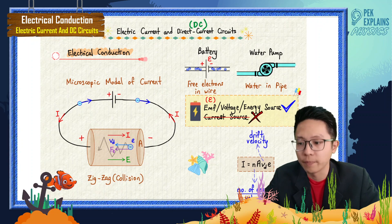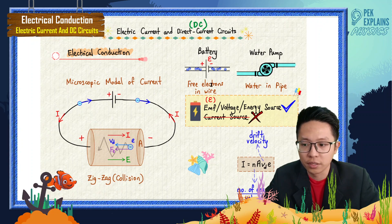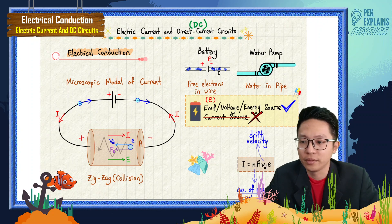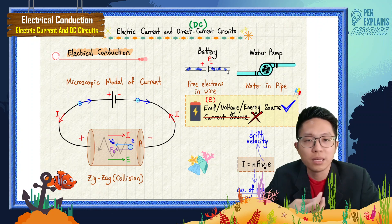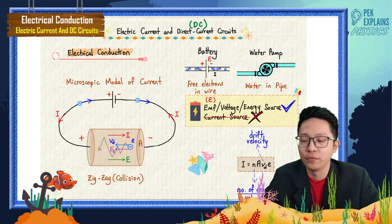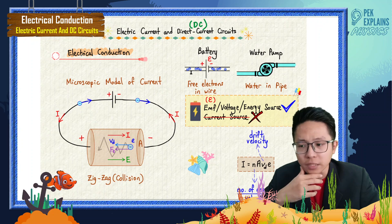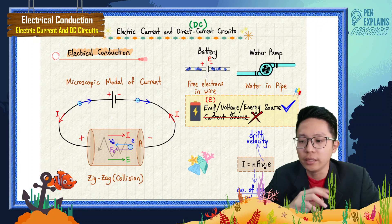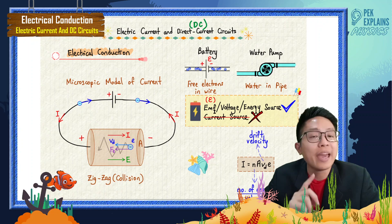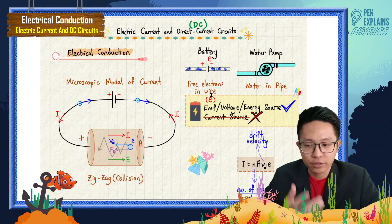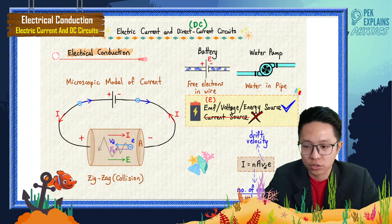The current does not come from the battery. Current actually is the free electrons, and these free electrons already exist in the wire. The wire itself is a conductor which has many, many free electrons. The battery is just there to move the electrons — to make the electrons move in the wire. Battery is actually an EMF source or voltage source.